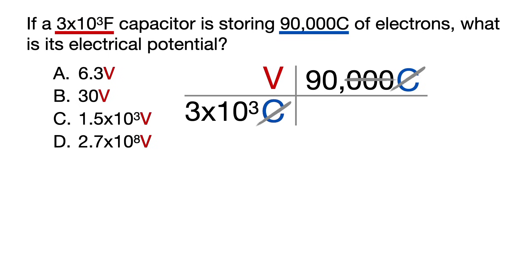So now just cancel 3 zeros on the top with 3 zeros on the bottom to give us 90 divided by 3, which equals 30 volts. Simple as that.